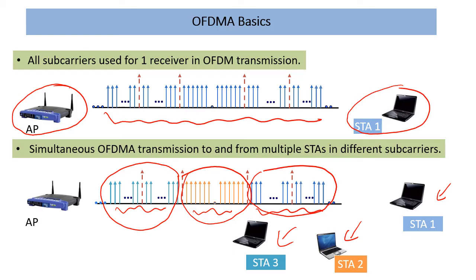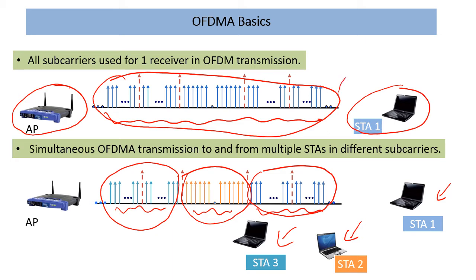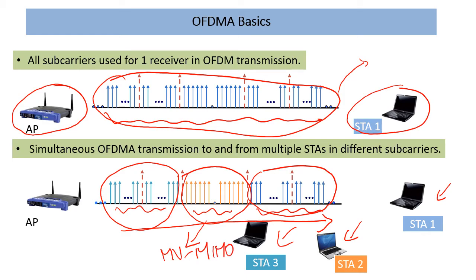MU-MIMO implies full-bandwidth MU-MIMO — using all the sub-carriers but using the same sub-carriers for more than one user. On the downlink it's AP to multiple stations, and on the uplink multiple stations send to the AP. A combination of OFDMA plus MU-MIMO would mean splitting first on the frequency axis via OFDMA, and then within one of those RUs of sufficient size, performing MU-MIMO. That combination will likely take some time before products appear in the market.